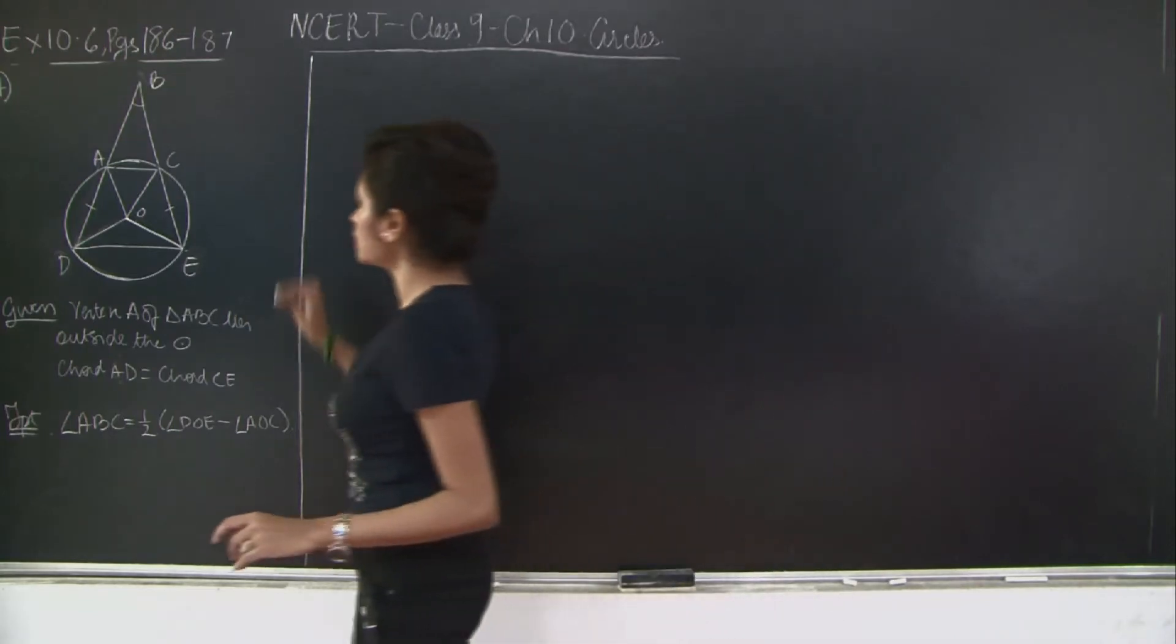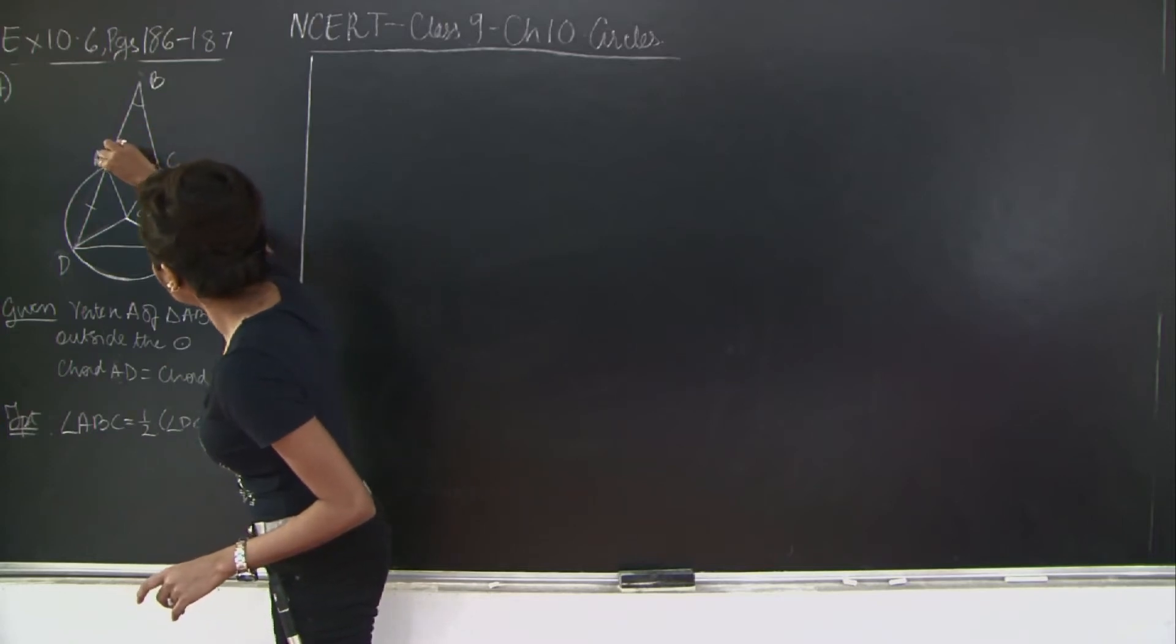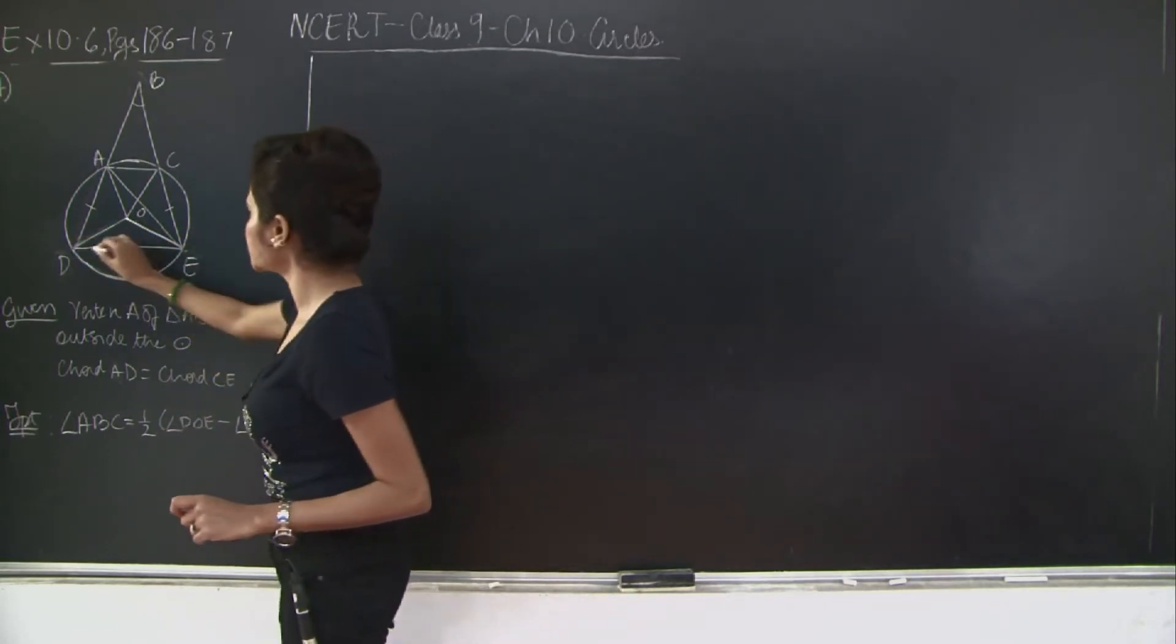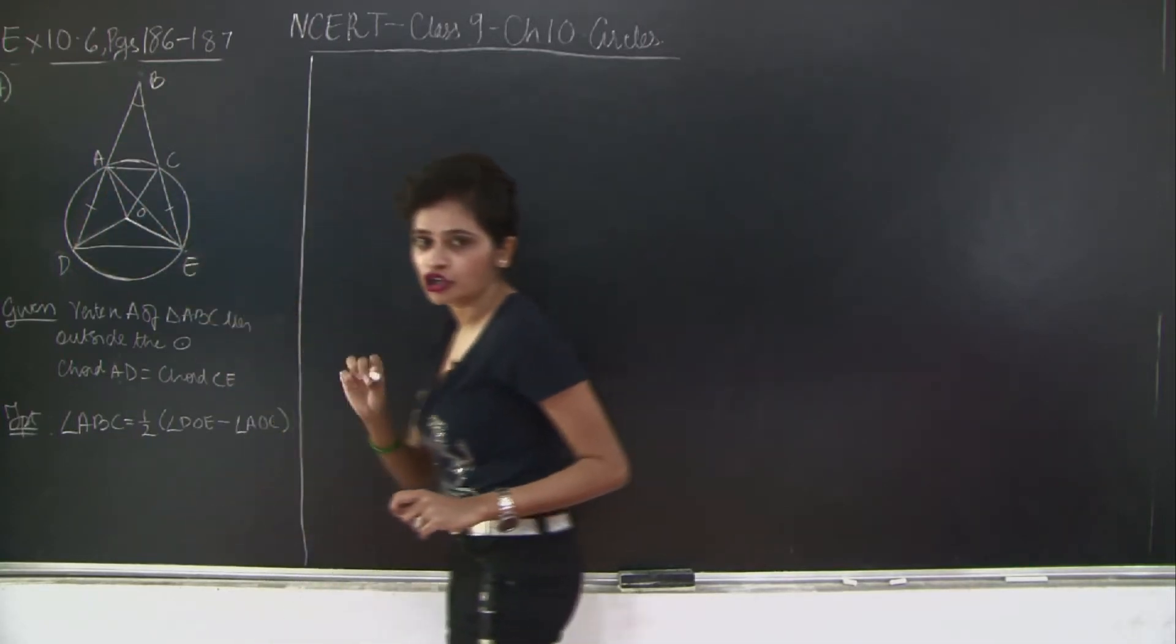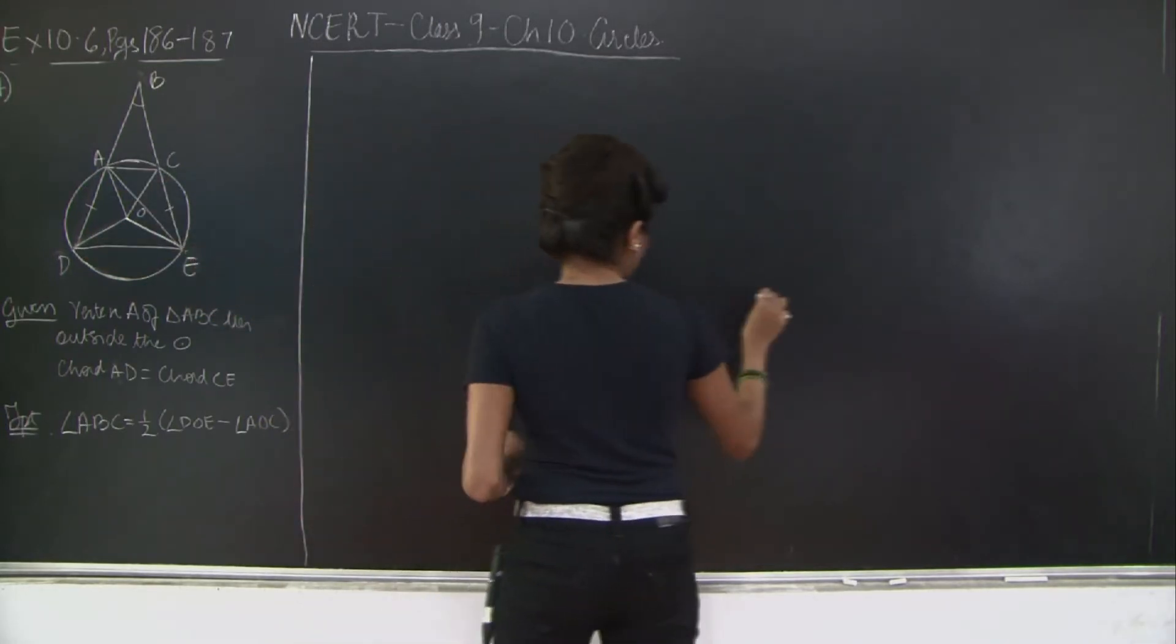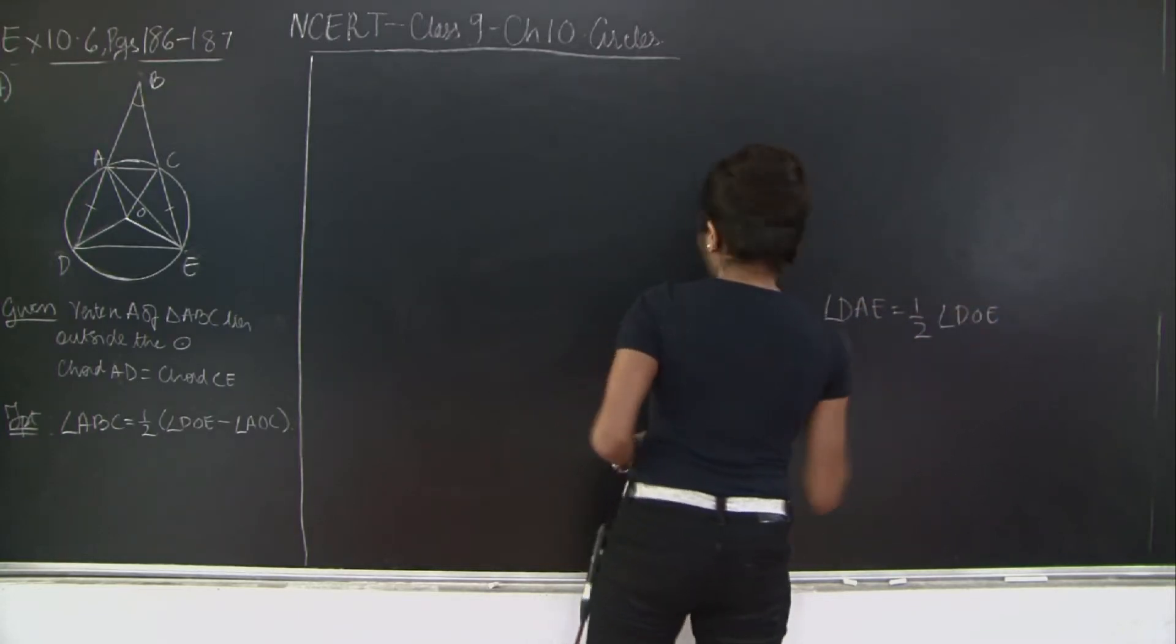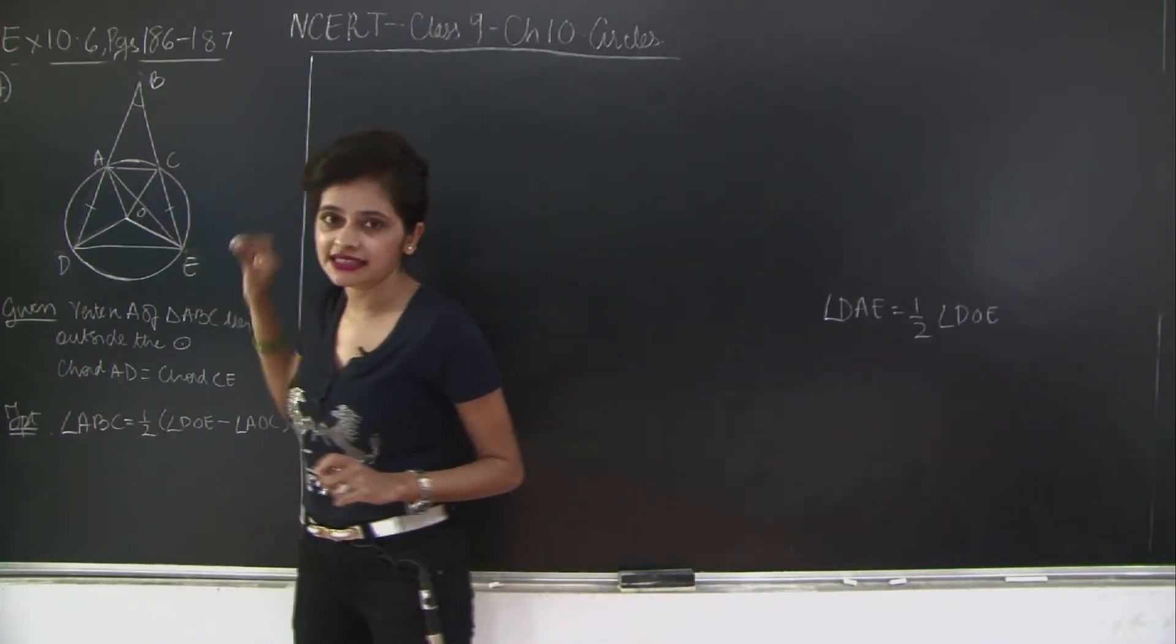The simple trick here is I connect A to E. See what happens when I connect A to E. I have my chord DE here which is now subtending angle DOE at the centre and DAE at the circumference. So you can strike a relationship between DOE and DAE. What is that going to be? Angle DAE is equal to half angle DOE, right?